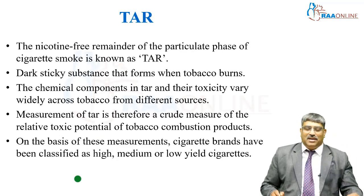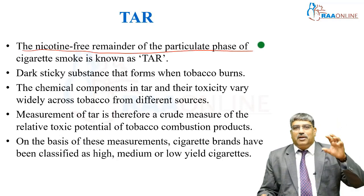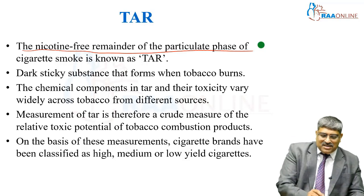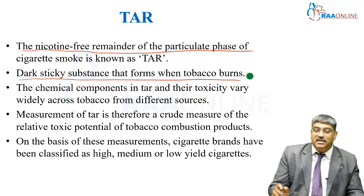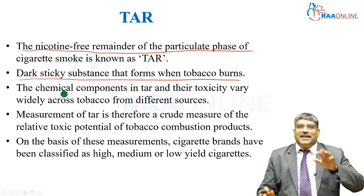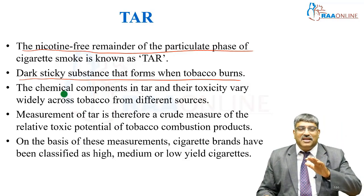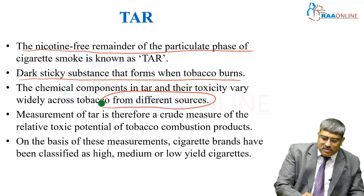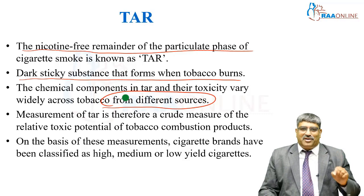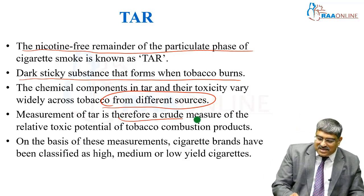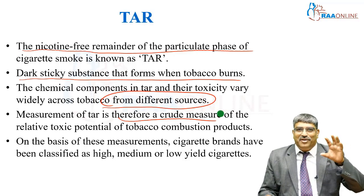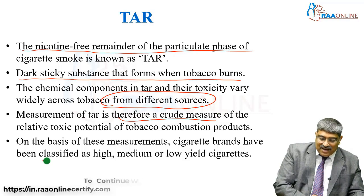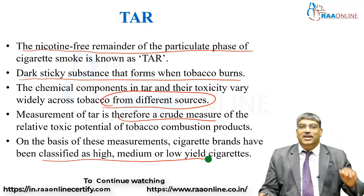Coming to tar — the nicotine-free residue of the particulate phase, which is grey in colour, is called tar. It is the dark sticky substance which forms when tobacco burns. The chemical components in tar and the toxicity vary widely across tobacco from different sources. The measurement of tar is therefore a crude measure of the toxic potential of the tobacco product. With this measurement, you can classify cigarettes as high, medium, or low yield.